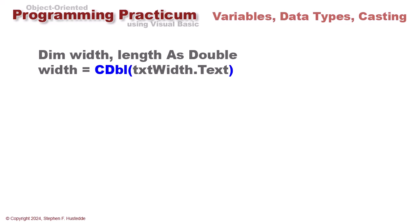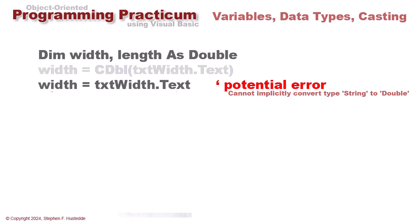However, we could say width equals txt width dot text without the cdbl, and that creates a potential error. In a lot of languages outside of Visual Basic, you might get an error like "cannot implicitly convert type string to double." These are languages that are strictly typed.